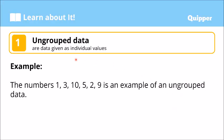First, let us define ungrouped data. When we say ungrouped data, these are data given as individual values — ibig sabihin, hindi pa siya nag-grupo, hindi pa nag-group into different intervals or into different classes. This is also known as raw data. Example: the numbers 1, 3, 10, 5, 2, and 9 are an example of ungrouped data.